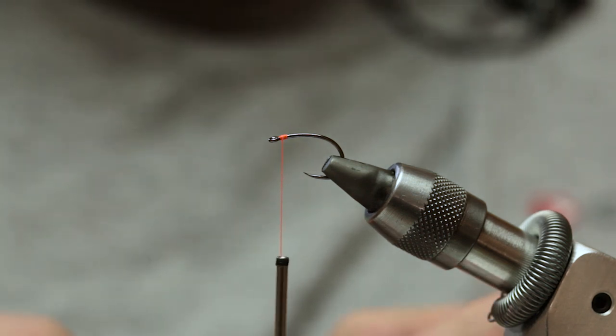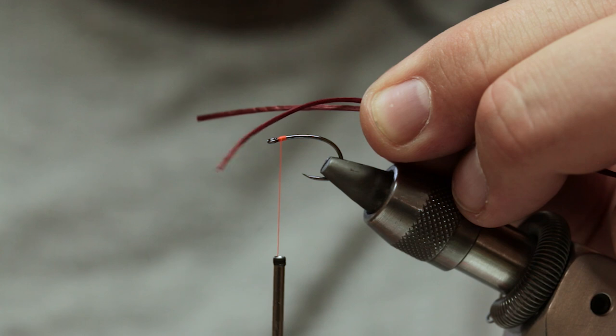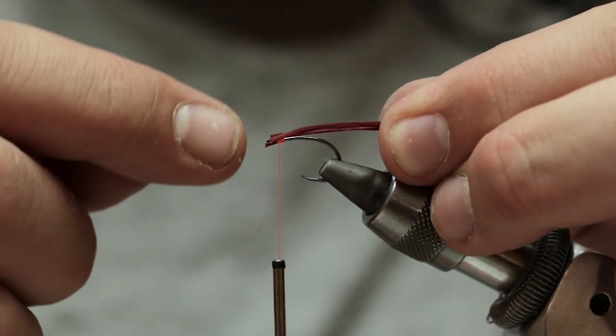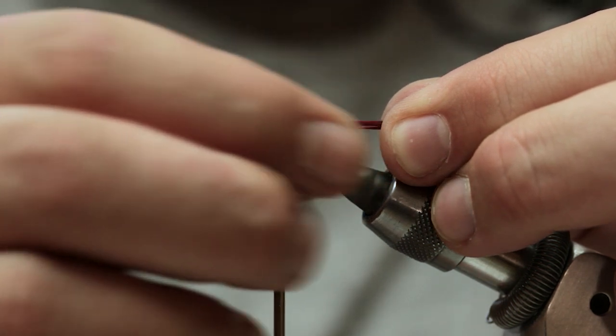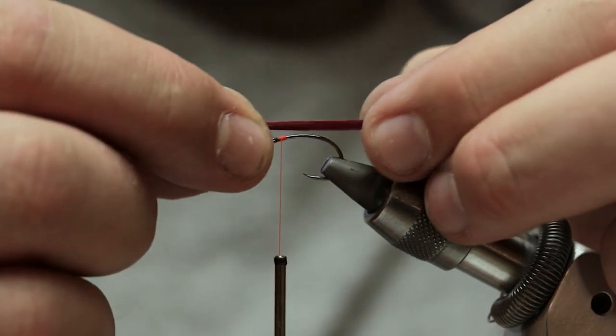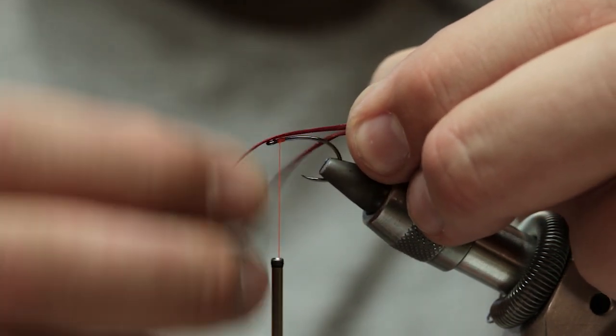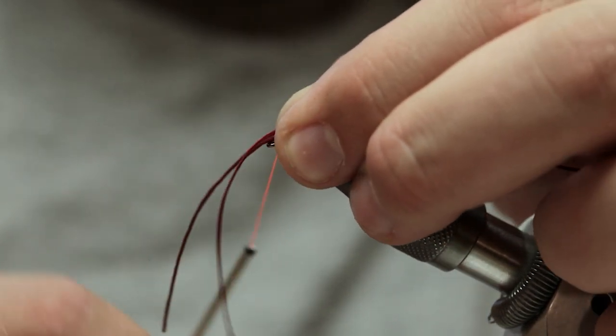At this point now, take your claret flexi-floss and together gauge your legs. I like to make them three times the length of the hook. So there's one, two, three, and you tie it off there.